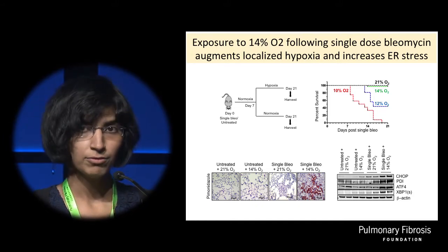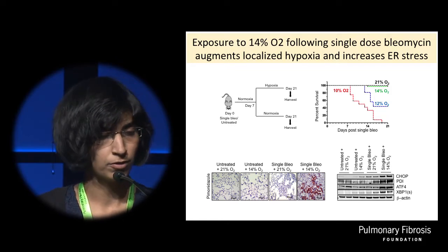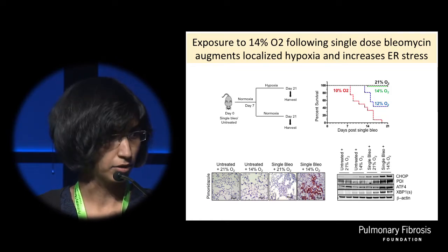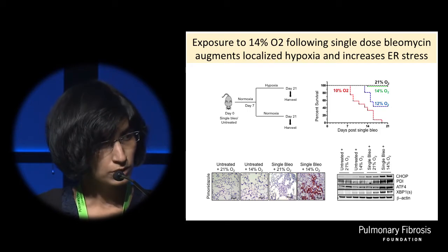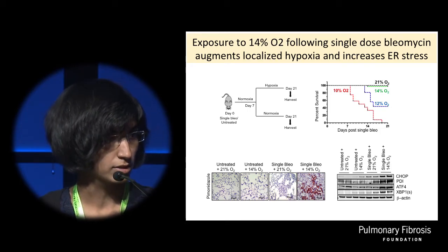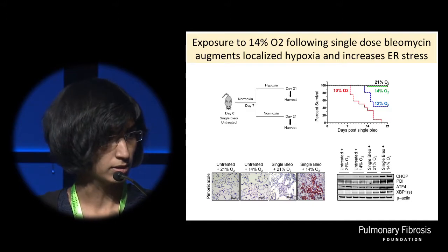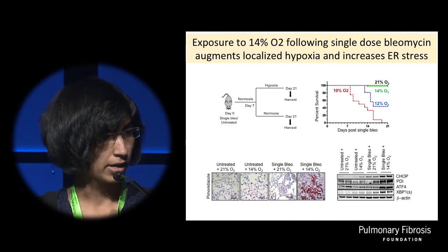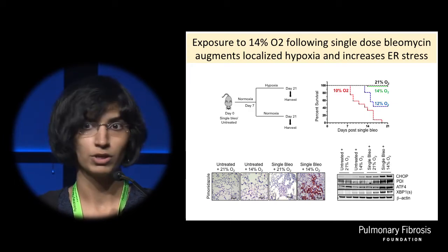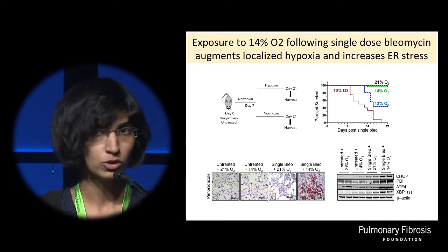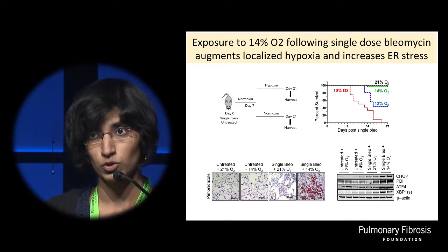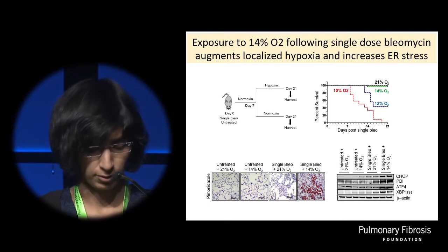We then took human IPF lung sections and stained them for hypoxia markers. We saw prominent expression of a number of hypoxia markers in hyperplastic type 2 AECs, and these were also the cells that stained positively for CHOP, rendering support to the idea of tissue hypoxia-induced ER stress in IPF.